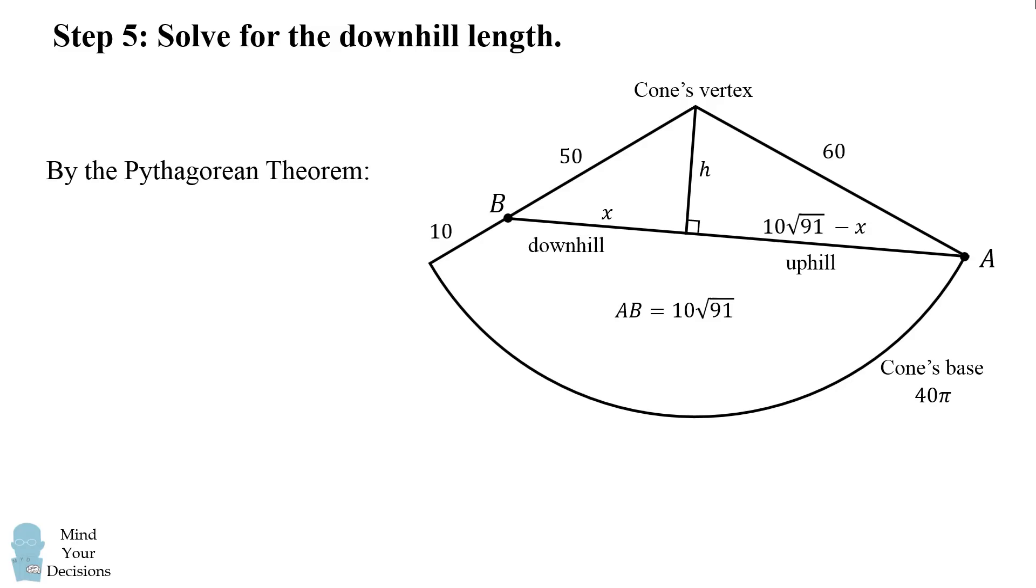By the Pythagorean theorem in one triangle, the uphill portion, we have the quantity (10√91 - x)² plus h² is equal to 60². And in the downhill triangle we have x² plus h² is equal to 50².